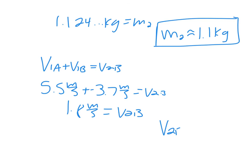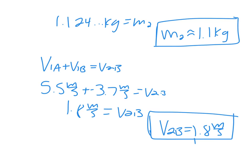V2B = 1.8 m/s — no rounding needed — and since it's positive, the target ball moves to the right. Pretty simple: it's substitution, and the two equations are always the same — conservation of momentum, and V1A − V2A = V2B − V1B. You will have both equations on a test. See you next time.